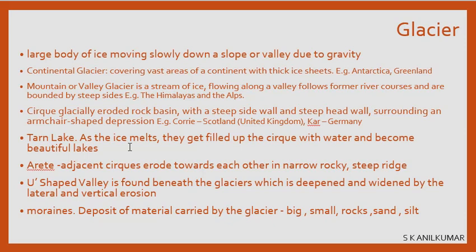An arête is formed when adjacent cirques erode toward each other, leaving a narrow, rocky, steep ridge or bridge between them. A U-shaped valley is found beneath the glacier because the valley is fully covered by ice and deepened by vertical erosion and widened by lateral erosion — becoming deeper and wider over time.